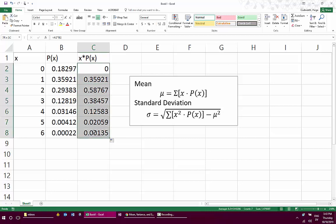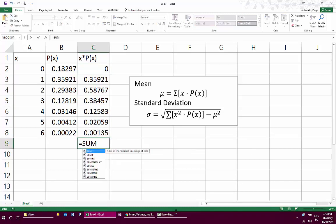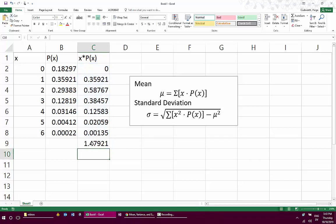So once I've got the x times P(x) for every value of x, I want to add those up. So underneath here I'm going to do a sum and just use that sum function to add all of the x times P(x) values. That is the end of the mean calculation. So in this case, for this particular example, the mean of this probability distribution or the mean of the random variable x is about 1.5.